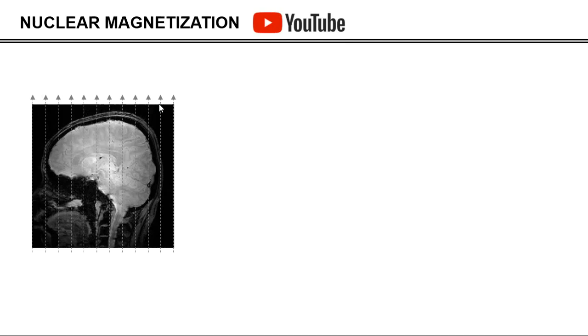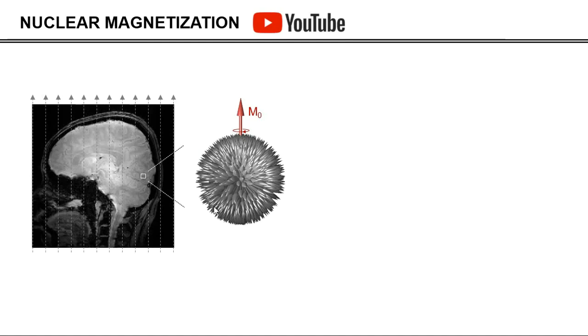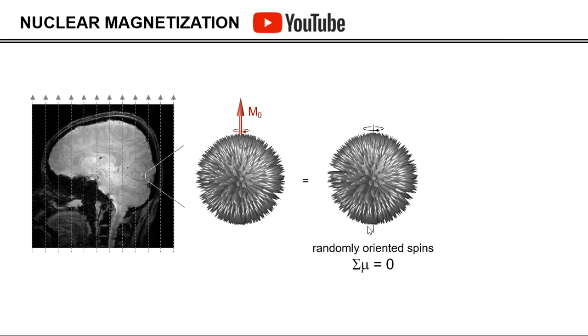Suppose that we have a subject in a strong external magnetic field, like an MRI scanner. If you now look at a small volume in the brain of this subject, it will contain billions and billions of nuclear spins. The far majority of these nuclear spins are in a random orientation, and therefore 99.9% of these spins, when you add the magnetic moments together, they'll end up with no signal at all.